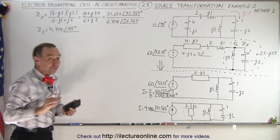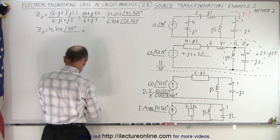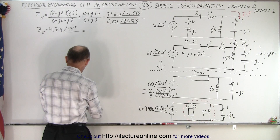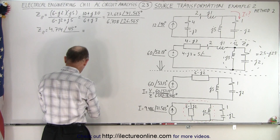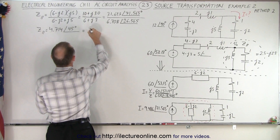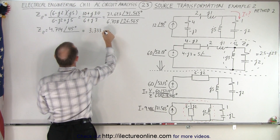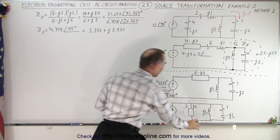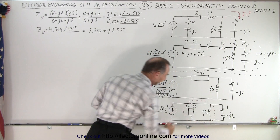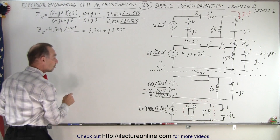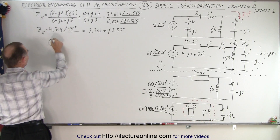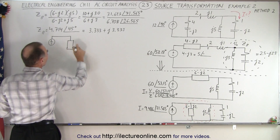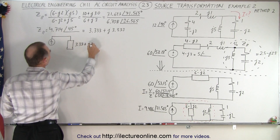Converting that to real and imaginary parts — we may need it that way. So we take the cosine of 45 and multiply that times 4.714, which gives us 3.333 plus j3.333. So that's the parallel impedance of these two middle branches. Let me redraw the circuit. So, I have a current source with an impedance of 3.33 plus j3.33.